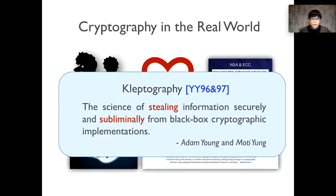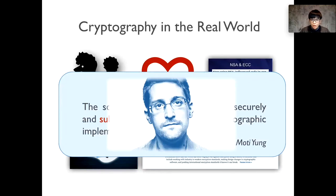In particular, attackers such as manufacturers and supply chain intermediaries may be able to modify the algorithm implementation to leak private information from crypto systems. Such a threat was identified as cryptovirology by Young and Yung over 20 years ago. While some cryptographers dismissed this attack as far-fetched at the time, there was a revelation of actual deployments of such attacks in 2013.